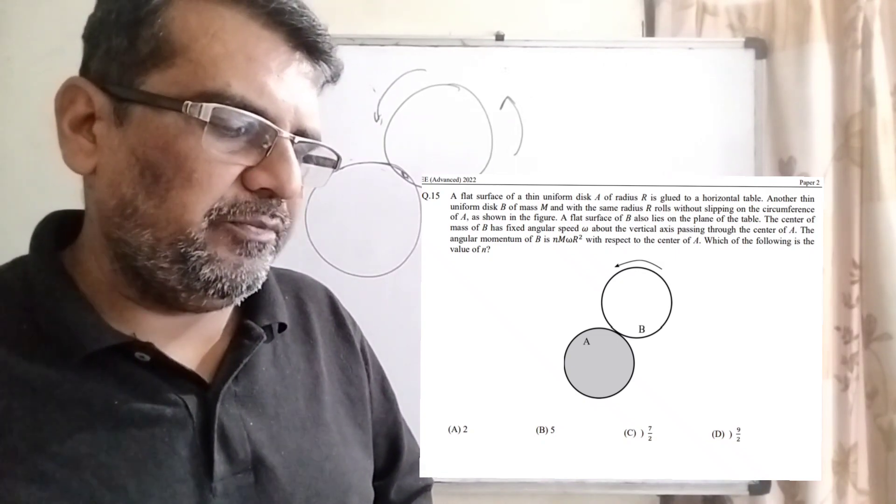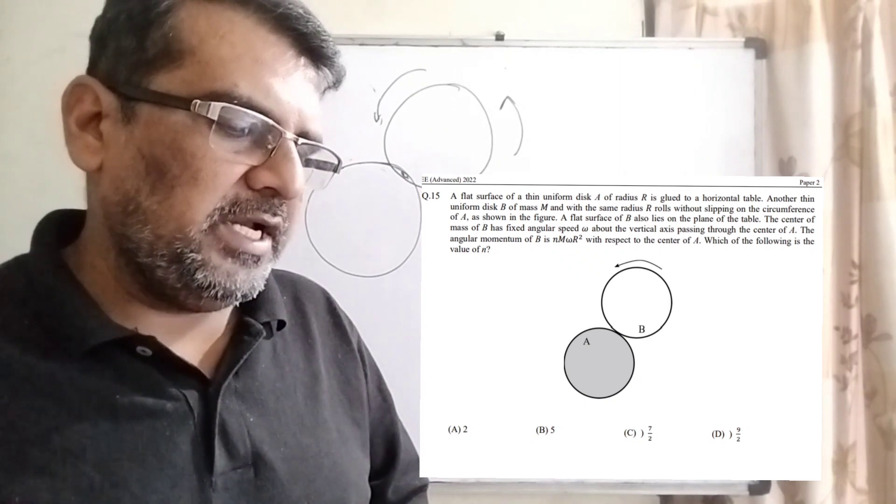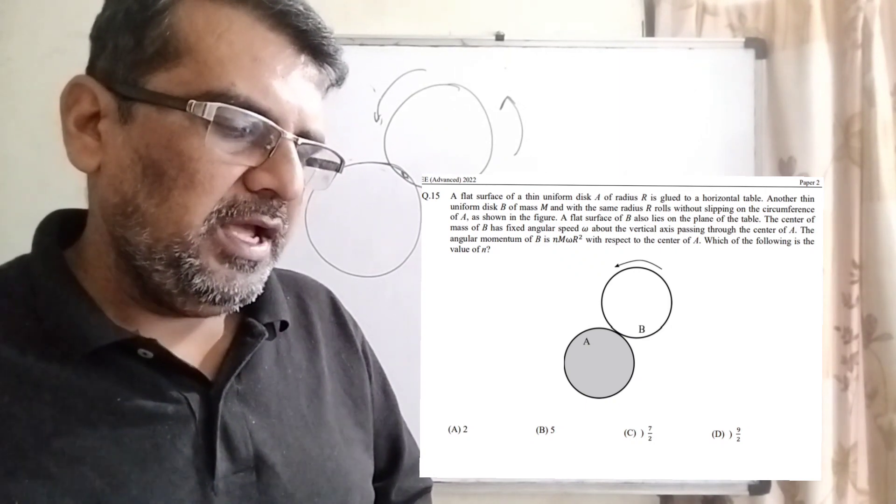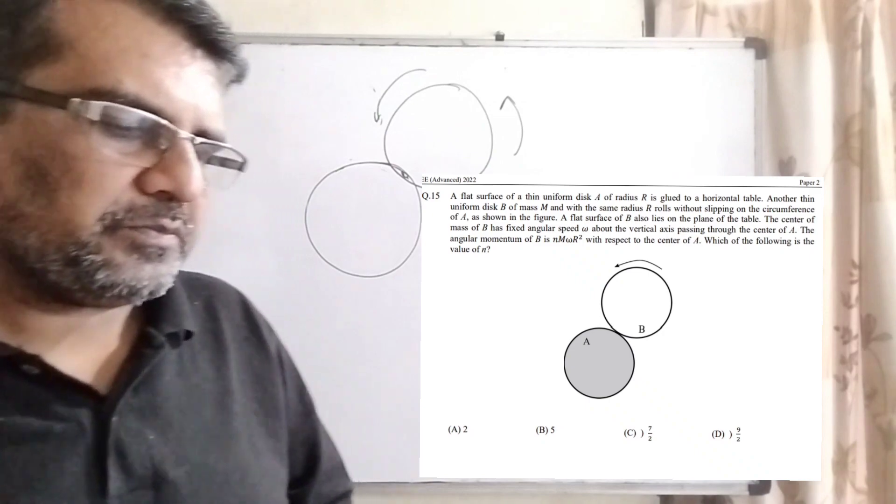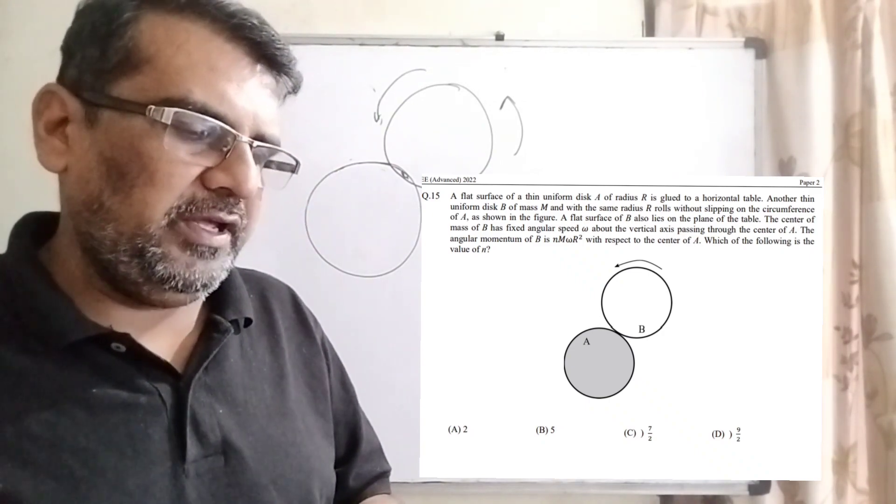A flat surface of B also lies on the plane of the table. The center of mass of B has fixed angular speed omega about the vertical axis passing through the center of A.